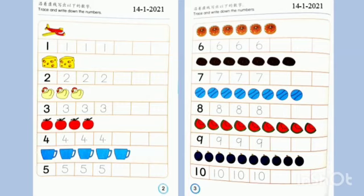Please count, trace, and write down the numbers. Look, here we have how many aeroplanes. Yes, the answer is 1. Now, let's trace and write 1.